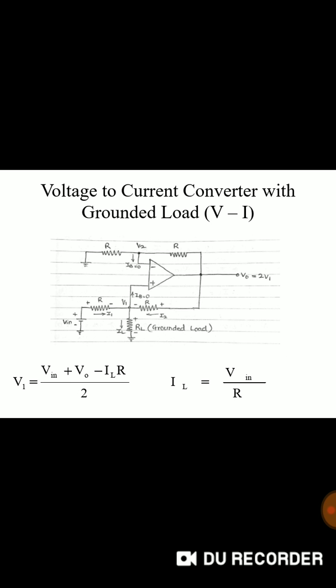The next circuit is V2I converter using grounded load. Here one of the input terminals are connected to ground. There are various steps. The first step is we have to calculate value of V1. This is the circuit diagram shown with all the symbols and components.